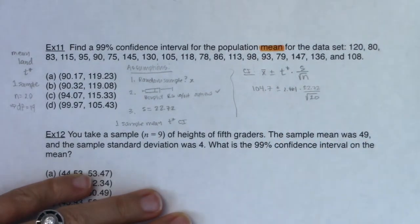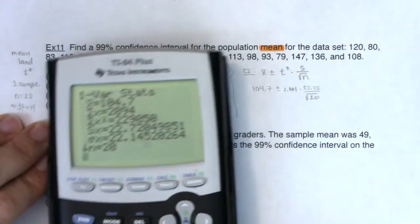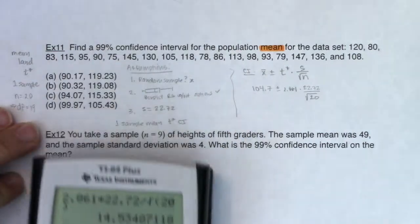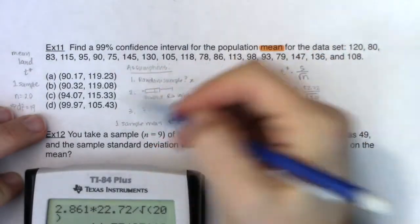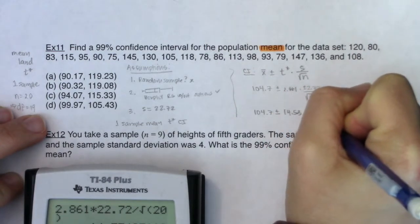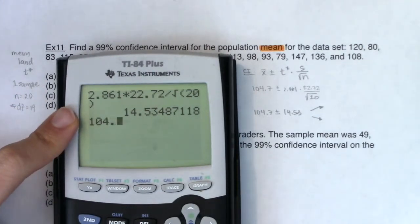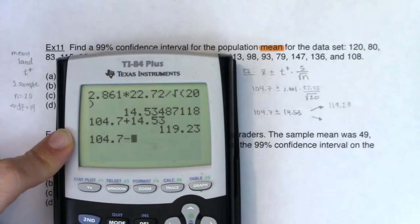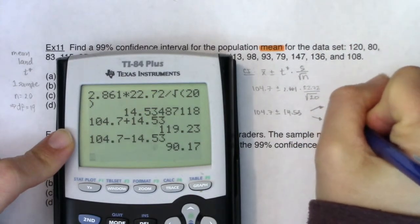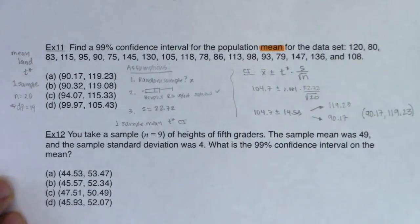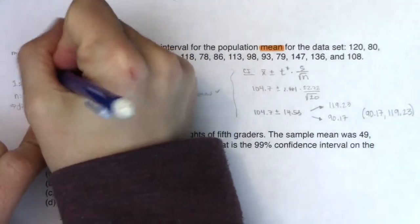Let's go see what my actual margin of error is, and we'll add and subtract it from 104.7. So it looks like it is 2.861 times 22.72 divided by the square root of 20. My margin of error is about 14.53. So 104.7 plus or minus 14.53. The upper bound is 104.7 + 14.53 = 119.23, and the lower bound is 104.7 − 14.53 = 90.17. So my confidence interval is 90.17 to 119.23. Looking at the answers, it looks like A. Nailed it.